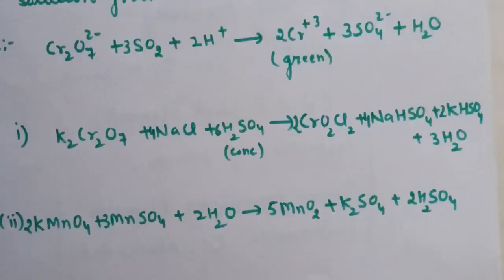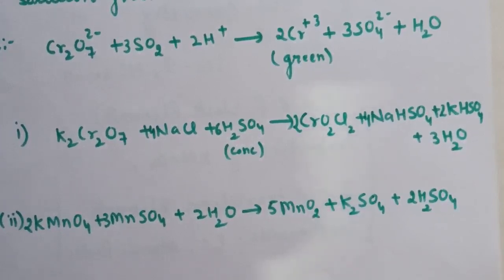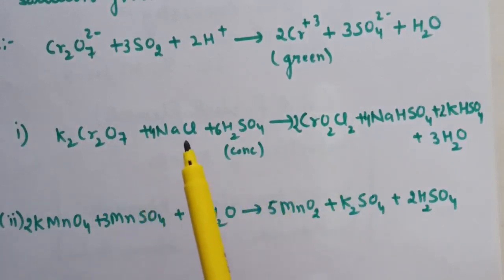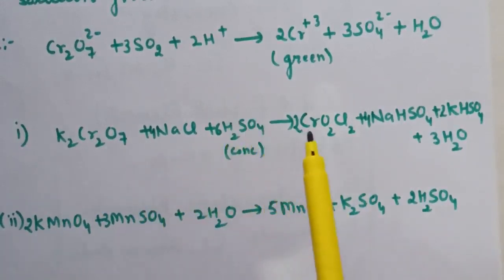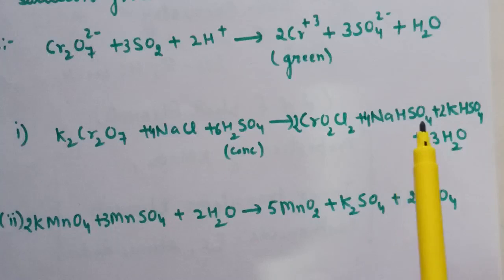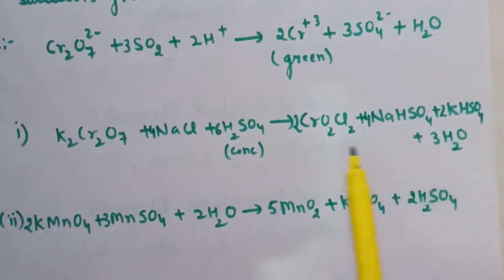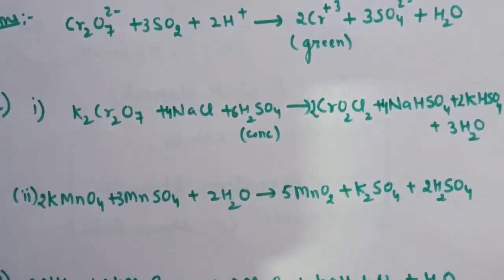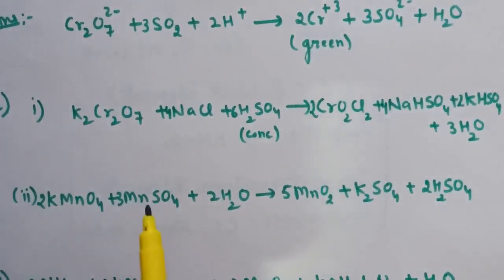Next question: write the balanced chemical equation for the following reactions. First: a mixture of potassium dichromate and sodium chloride is heated with concentrated H₂SO₄. The reaction: K₂Cr₂O₇ + NaCl + concentrated H₂SO₄ gives chromyl chloride (CrO₂Cl₂), plus sodium hydrogen sulfate, potassium hydrogen sulfate, and water. Second part: KMnO₄ is added to a hot solution of manganese sulfate. Here, KMnO₄ acts as an oxidizing agent and oxidizes the manganese salt to MnO₂.